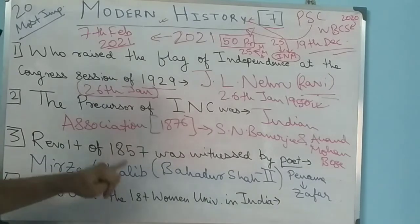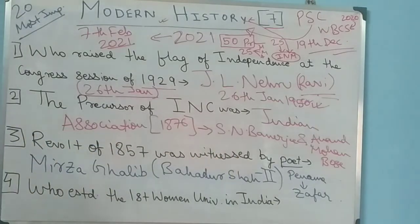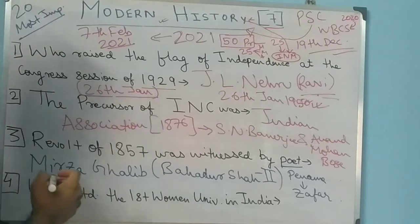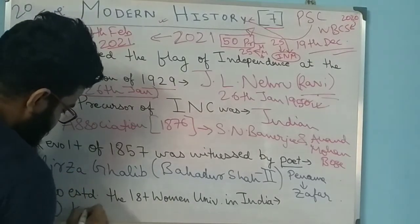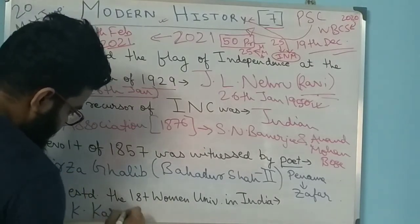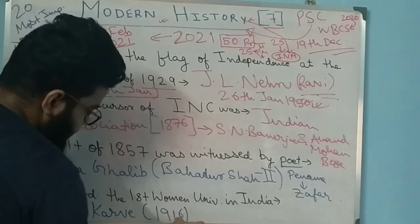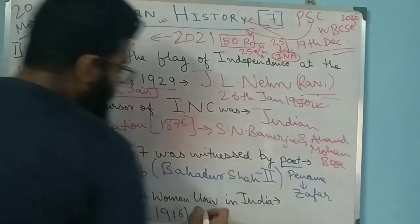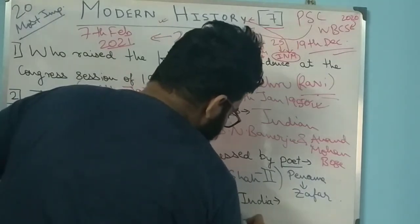Mirza Ghalib was the court poet of Bahadur Shah Zafar - that is why this mention comes in this question. Next question: Who established the first women's university in India? The answer is Dhondo Keshav Karve, also known as D.K. Karve. This was in 1916, which was also quite an important year.